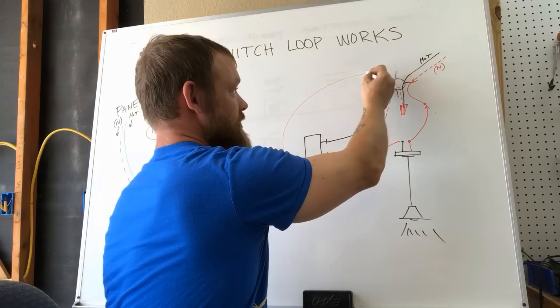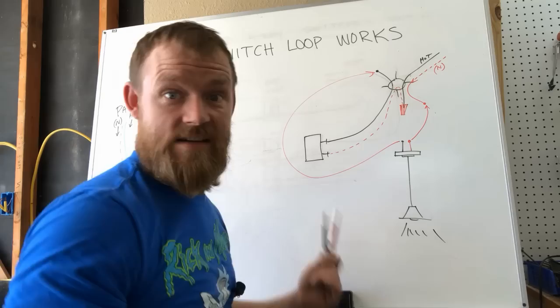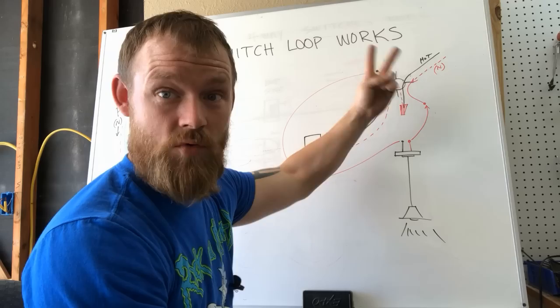But that's it. That's everything. That's how a switch loop works. All it is is switching from a different location and sending two conductors down to a switch.